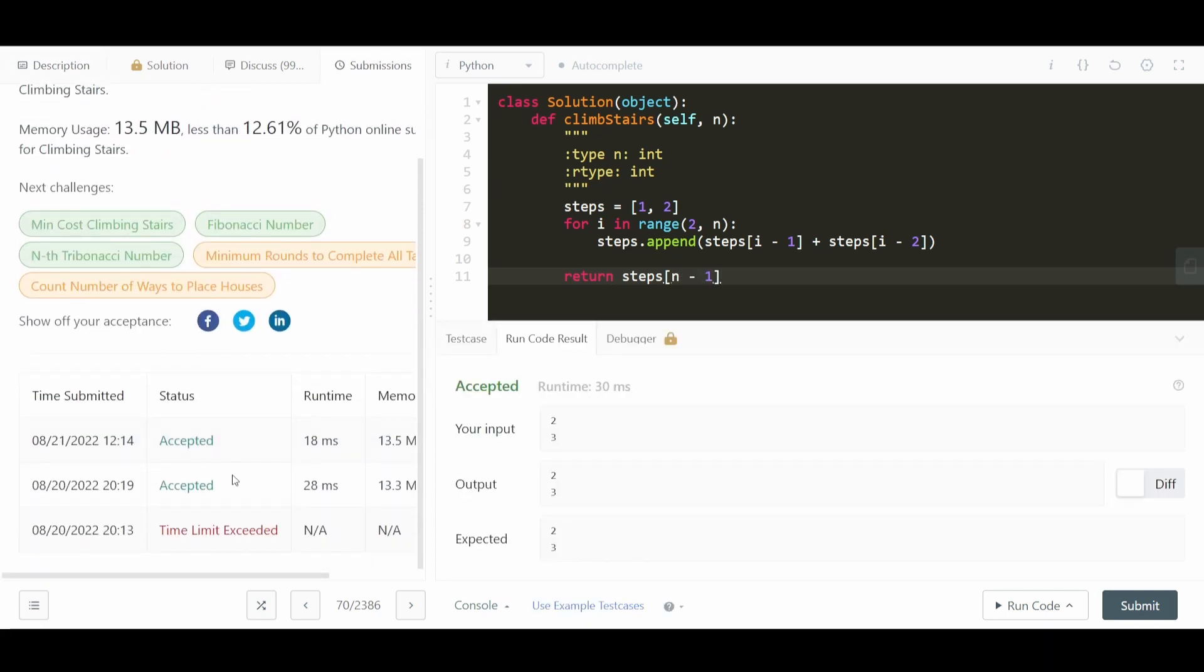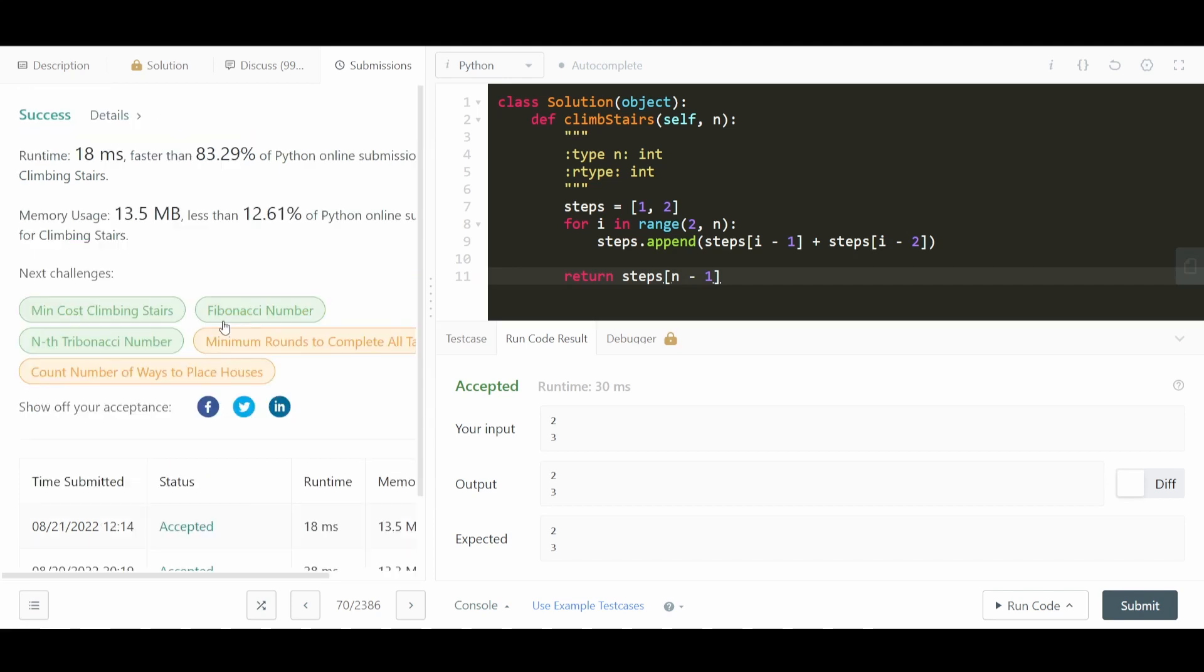So we can see that this time limit exceeded submission that I did earlier was actually when I used the recursive method. And of course, for a very large input, it timed out. And we can see that we have a very fast algorithm here. And we're using a little bit more memory than most people. And this is because I'm actually storing an array instead of just storing two variables.